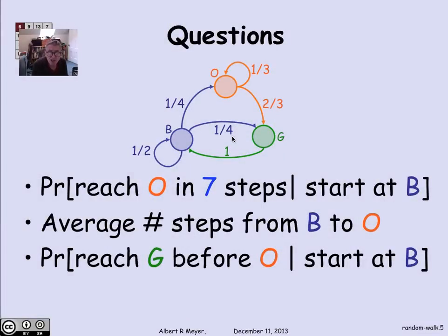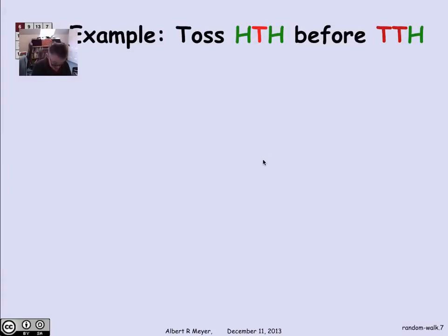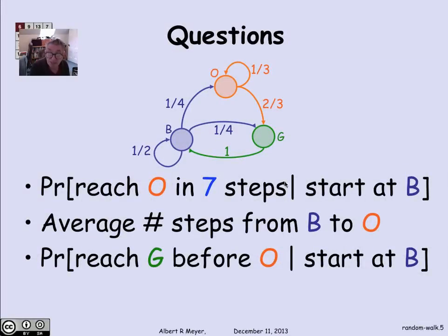So the general kinds of questions that come up when you're talking about random walks on graphs are illustrated by this simple three-state example with blue, orange, and green. We might ask, for example, starting at state B, what's the probability of reaching state O in seven steps? And that would be easy enough to calculate in this small example, but it would be a typical question.